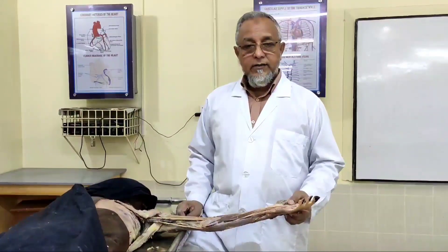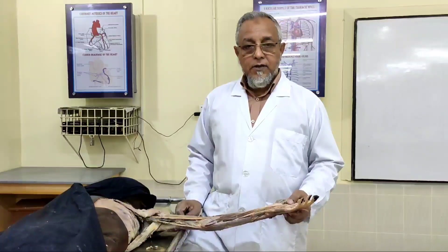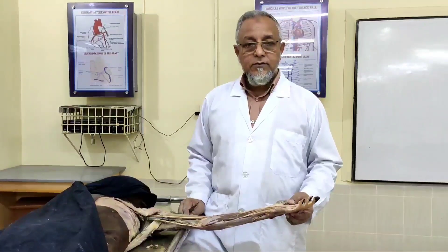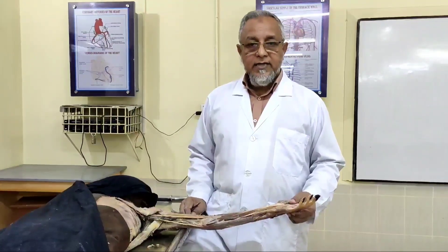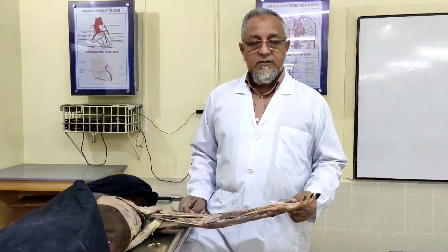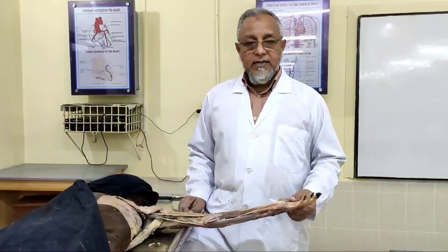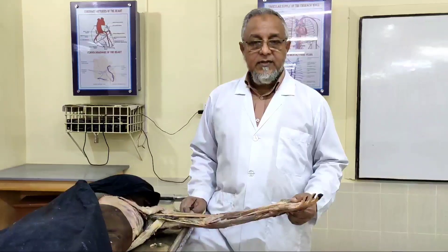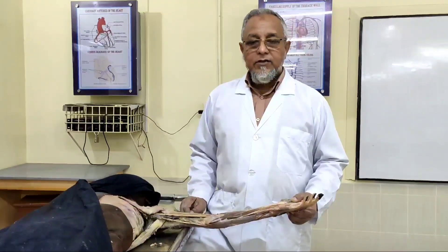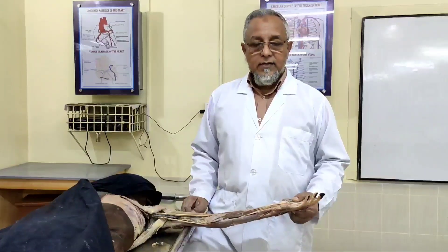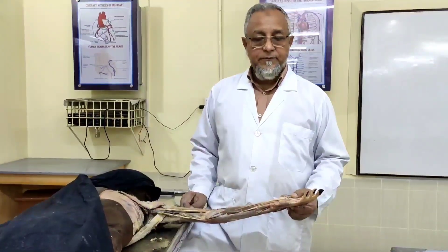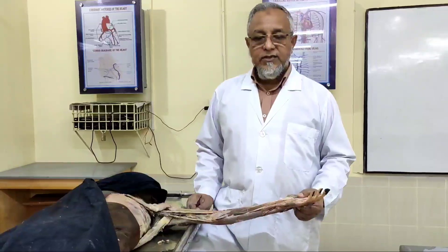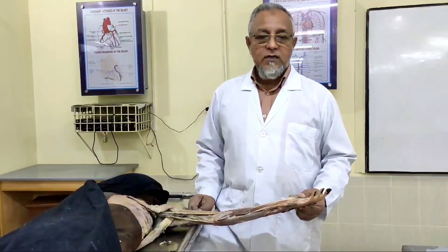I will identify and demonstrate the dissected parts of the different portions: pectoral region, axilla, front of the arm, front of the elbow, front of the forearm, and palm of the hand. I will identify the different structures so that students can easily identify those structures and correlate their theoretical understanding with practical identification for the subsequent learning process about the superior extremity. I think it will be very beneficial for everybody who goes through this video.